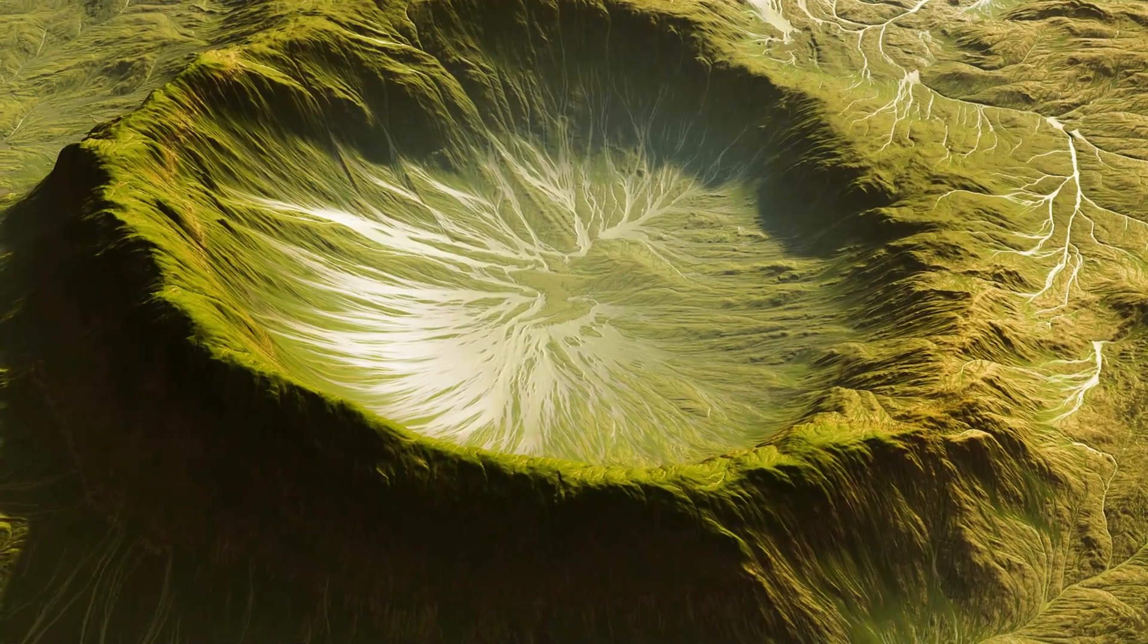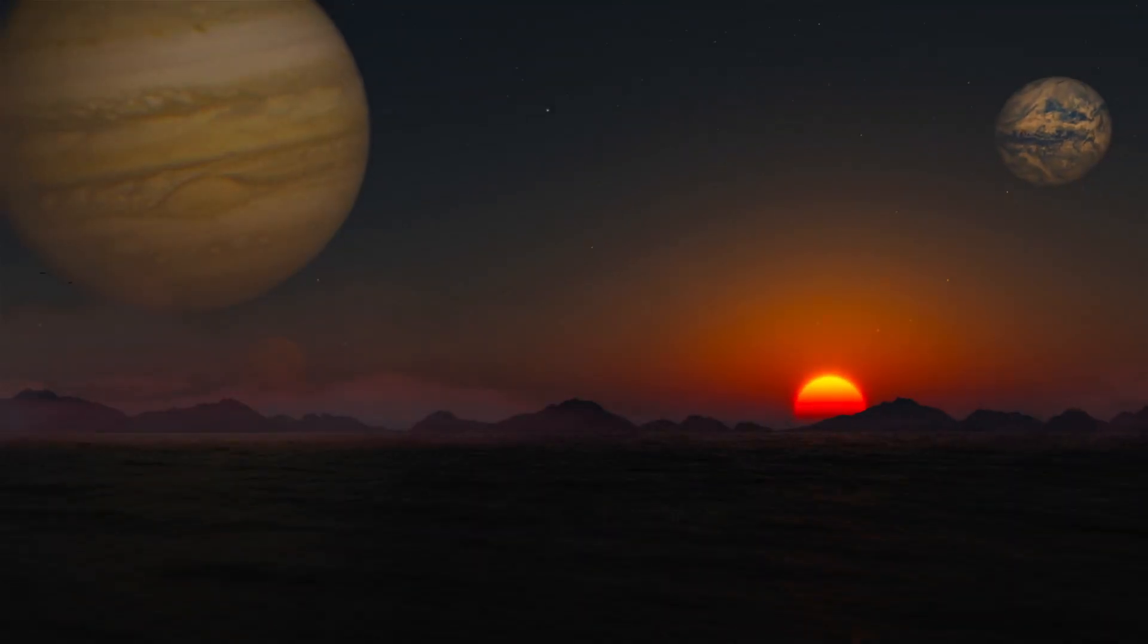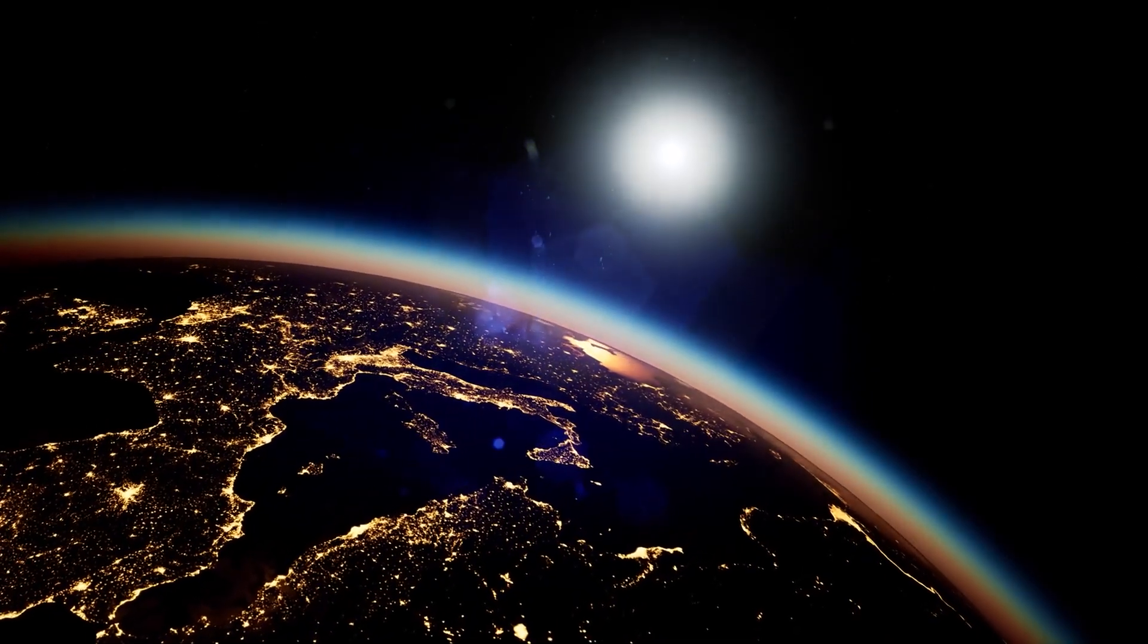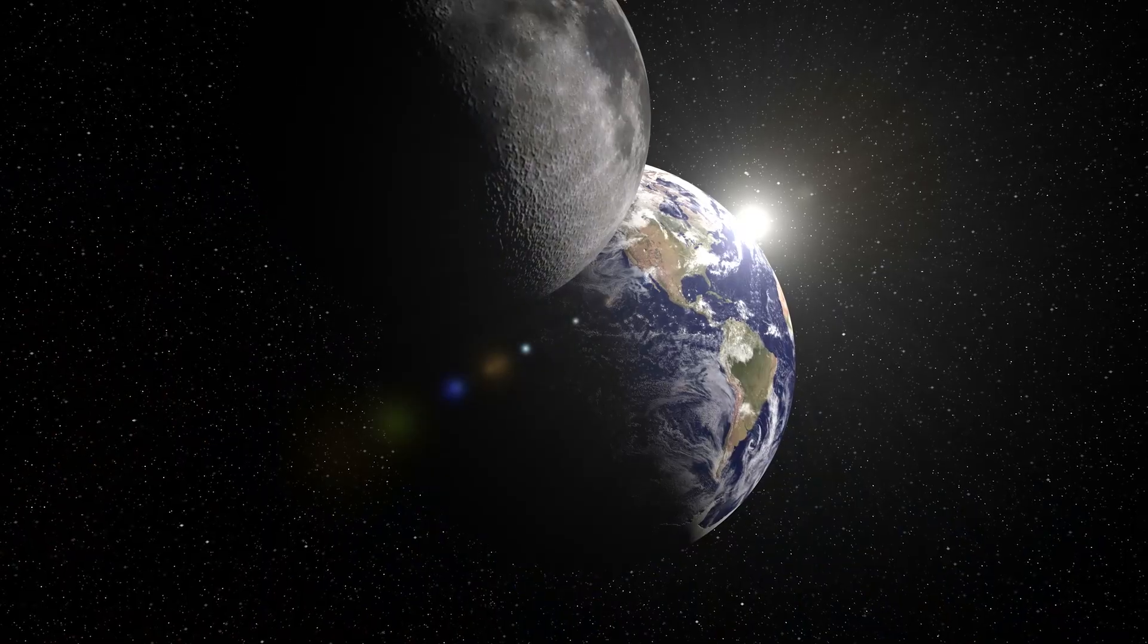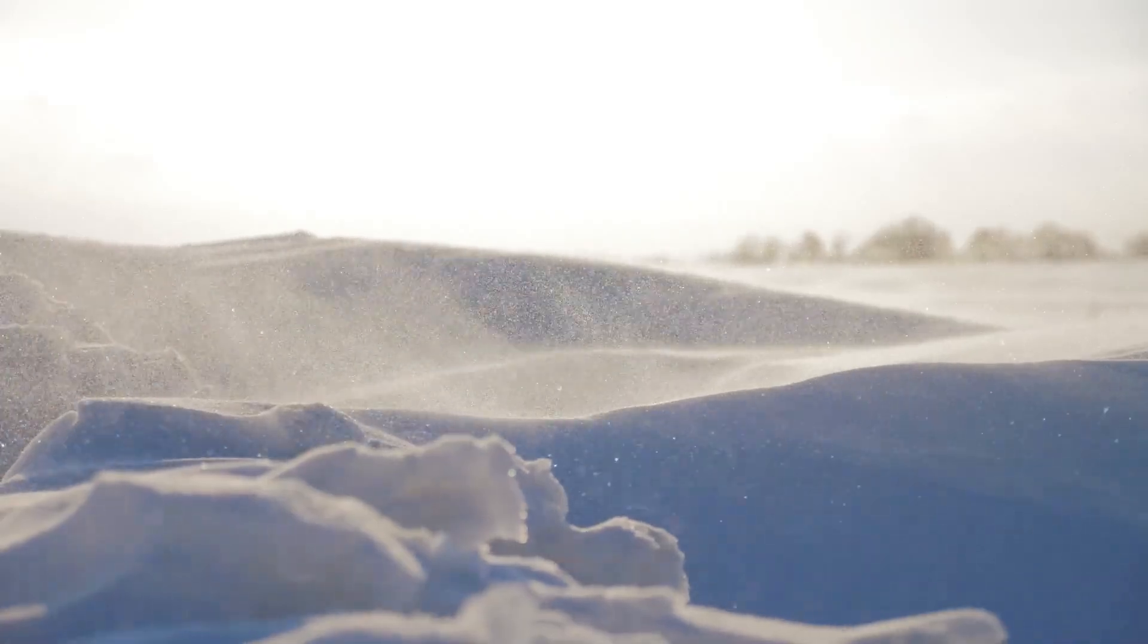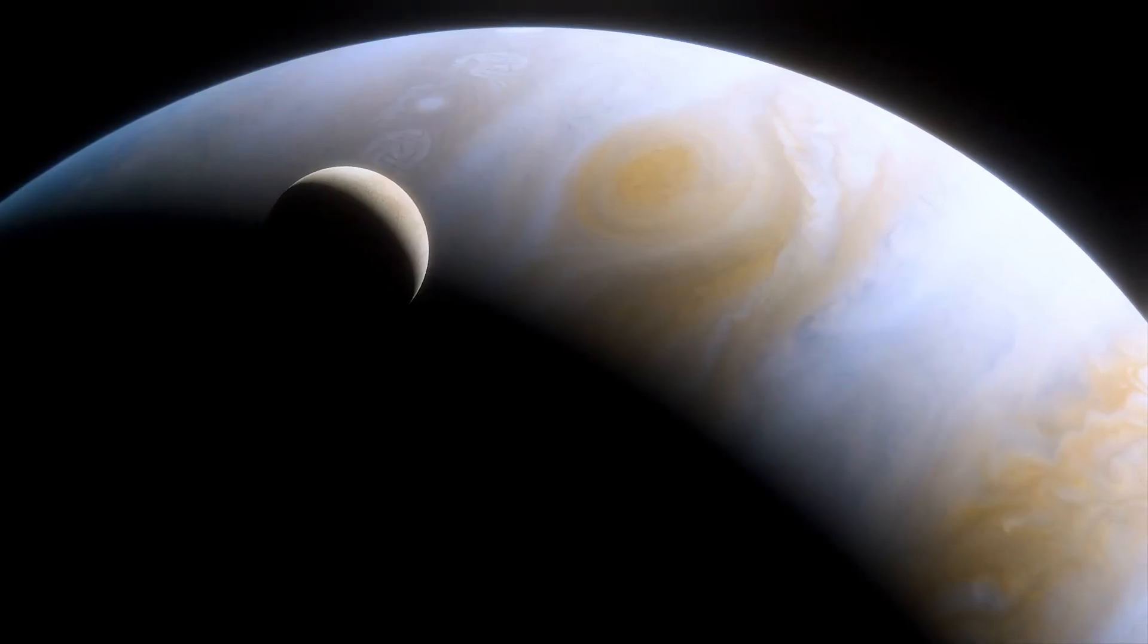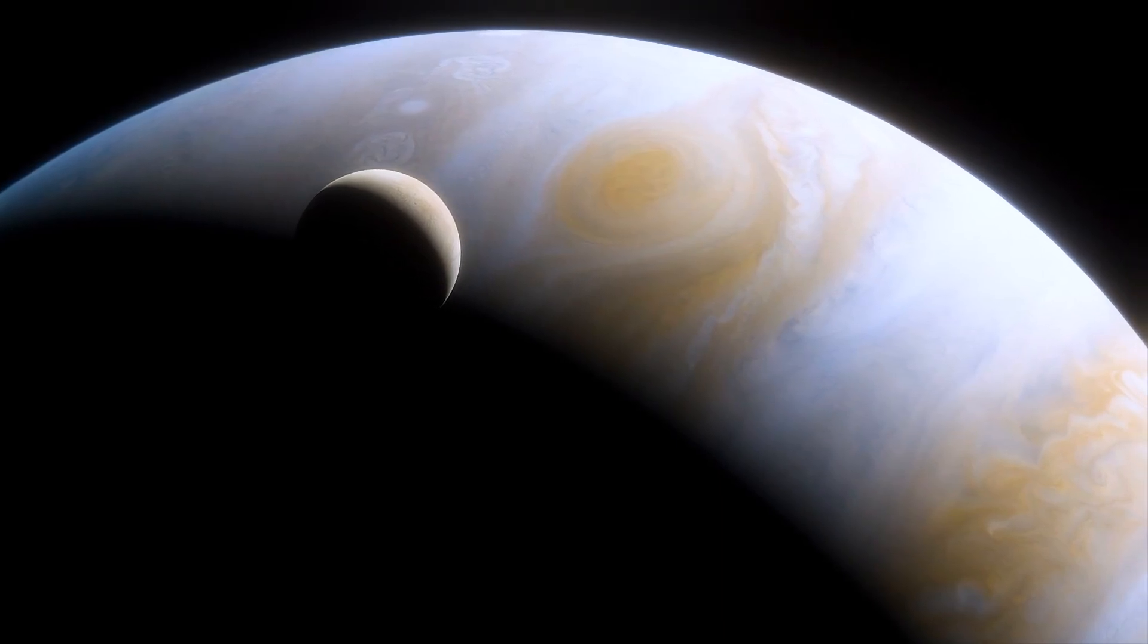Imagine for a moment life forms that have evolved entirely independent of Earth's environment. On our planet, life has followed a path defined by our unique conditions: a specific atmosphere, a certain range of temperatures, and an abundance of water. But what about life on other planets or moons, where conditions are radically different? That's where the concept of alien microbes comes in.